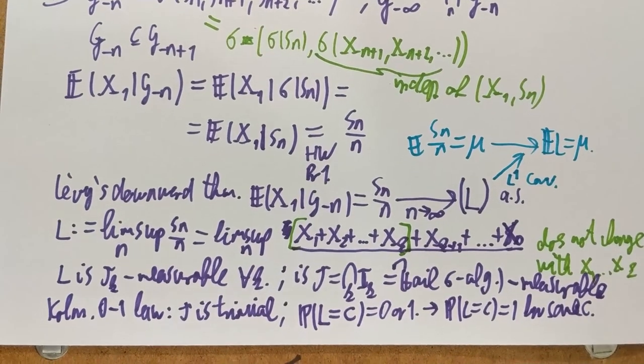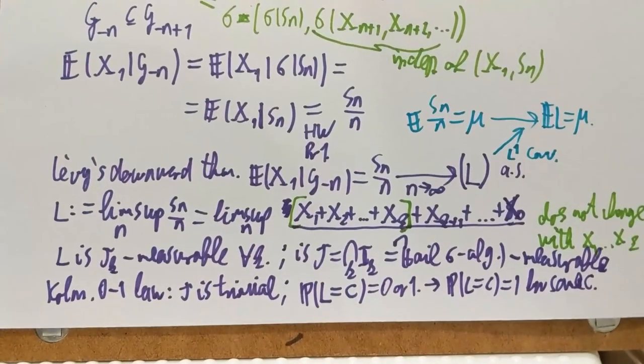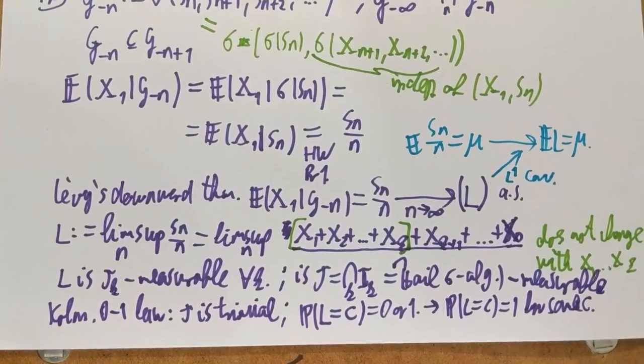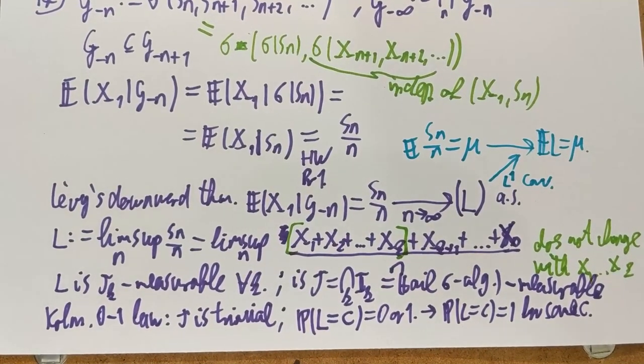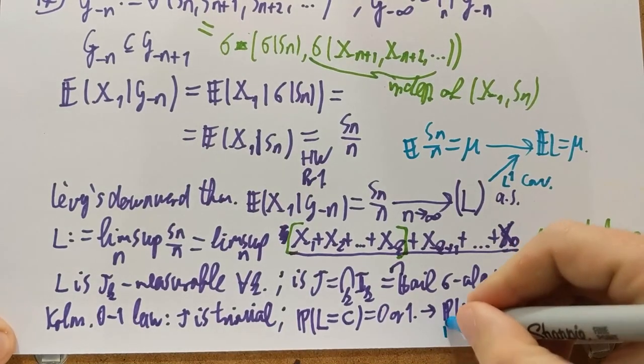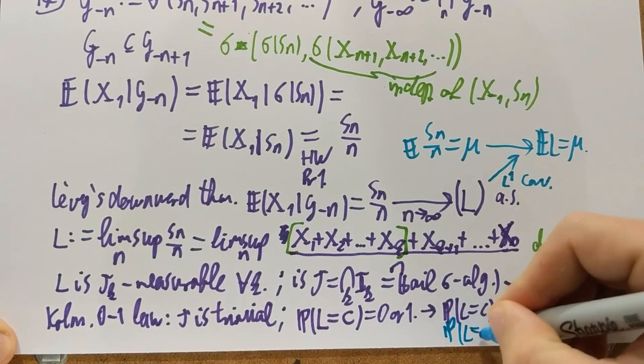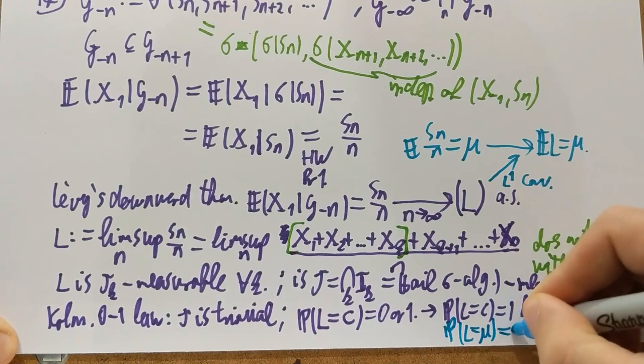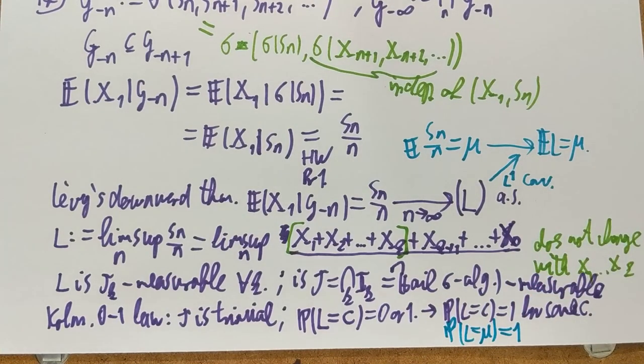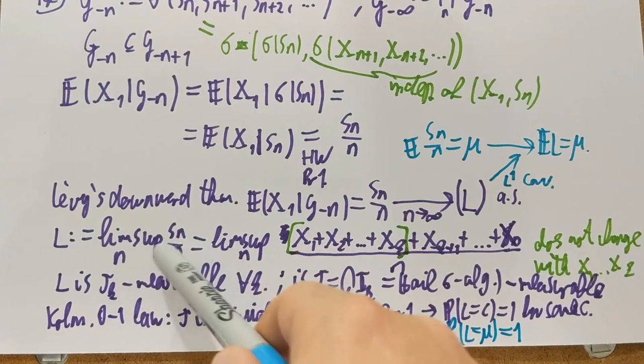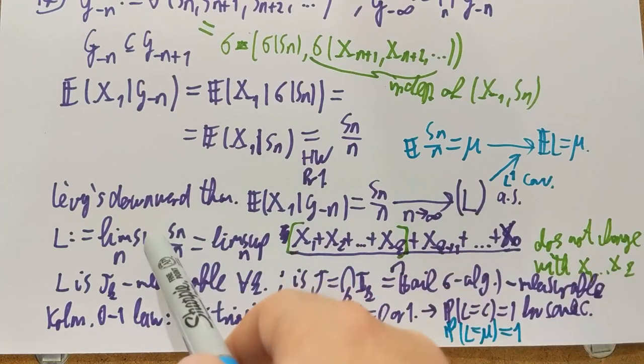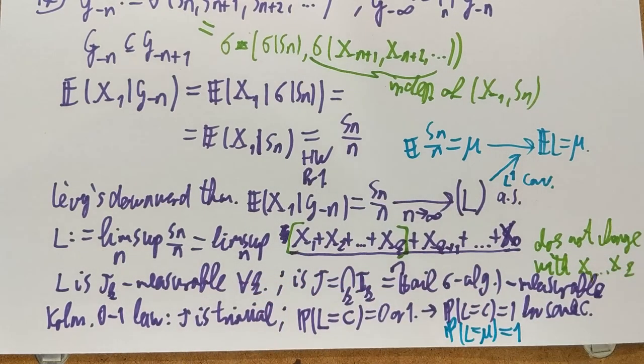C can only be mu. So the probability L equals to mu must be 1. And not something else. And for all other C's it's 0. So the end of the story is that this constant must be mu. Because of the mean of L. There is no other choice. That probability L equals to mu is 1. In other words we prove the theorem. So S_n over N is the almost sure. So L is the almost sure limit of S_n over N. And it must be mu with probability 1. That's the end of the story.